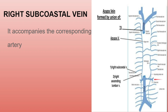In this diagram, the azygous vein connects the SVC and IVC. The right subcostal vein and the right ascending lumbar vein can be identified here. The third forming vein, the lumbar azygous, is also present, connected to the IVC.